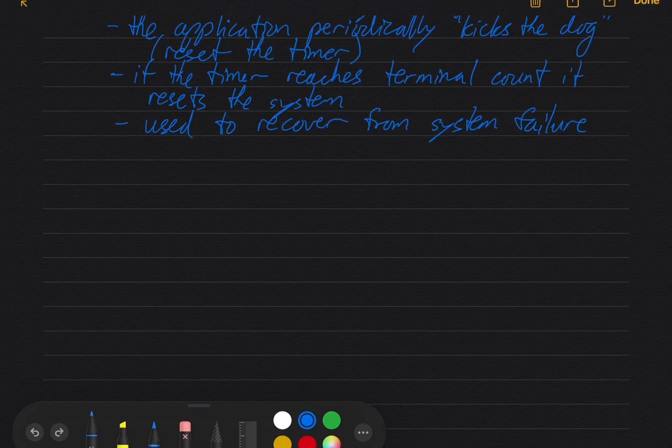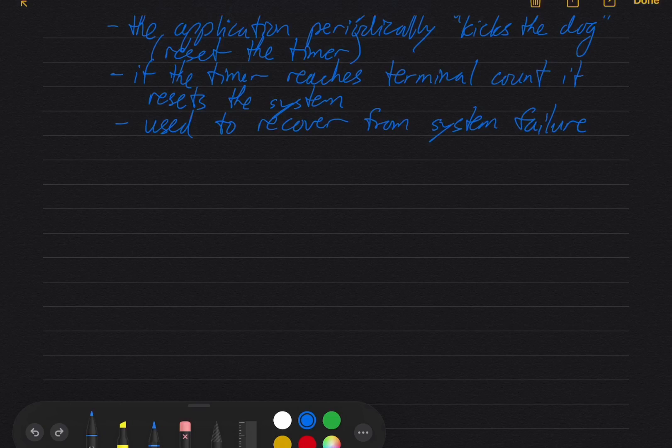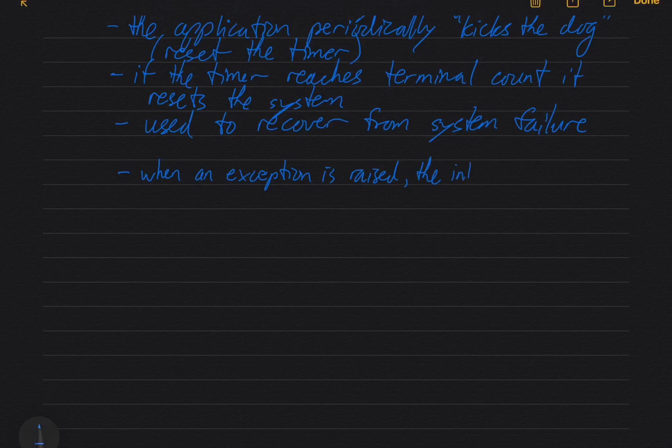So we've talked about the vector table and these exception handlers. Let's just talk about the steps that come between the exception being raised and the handler running. So when an exception is raised, so that's an interrupt request, a fault, a trap, the interrupt controller does a couple of things.